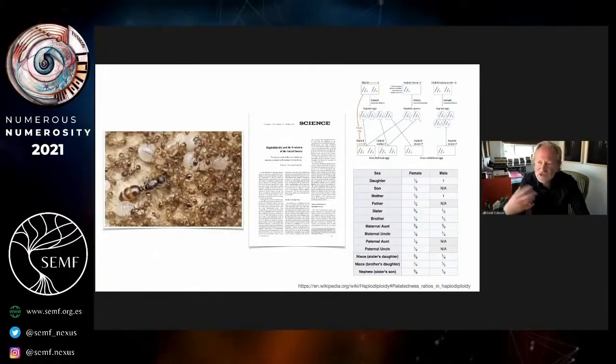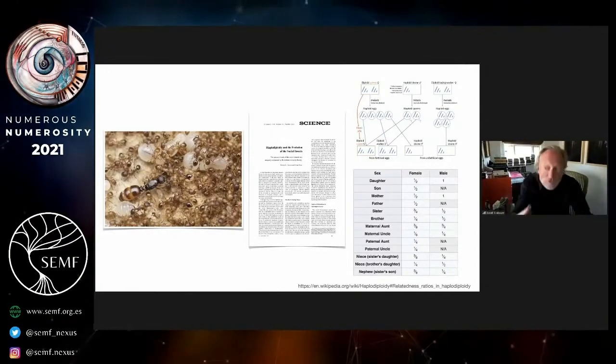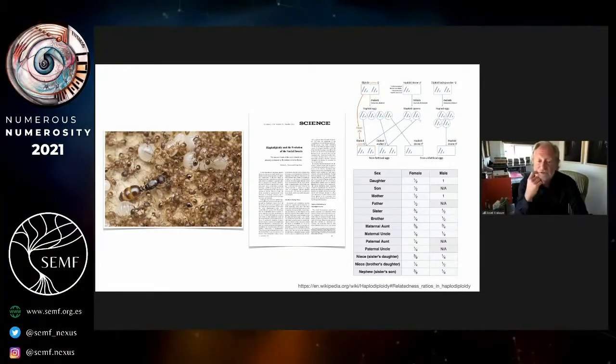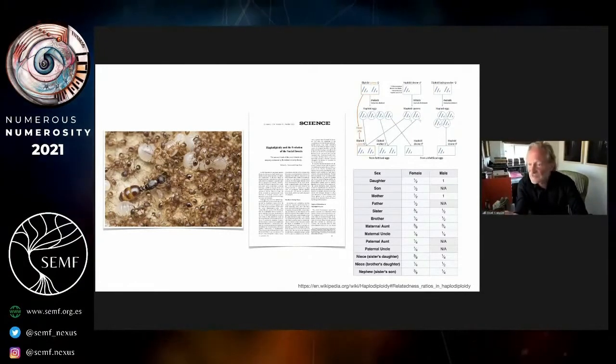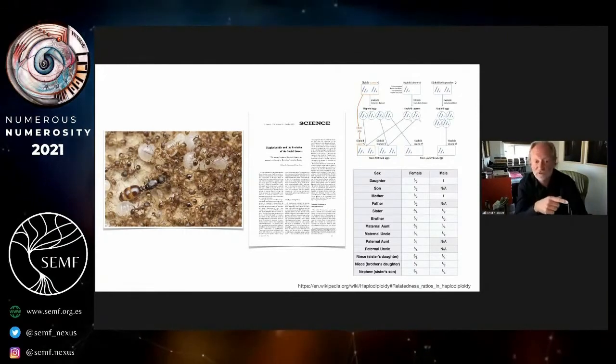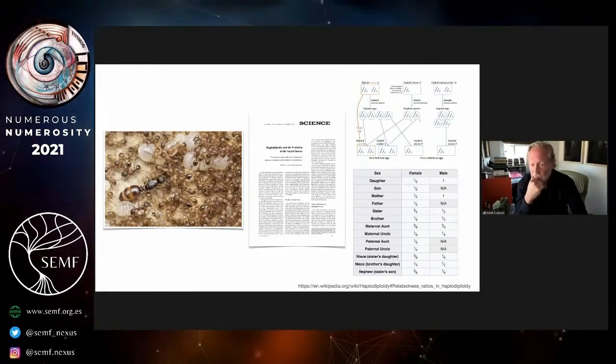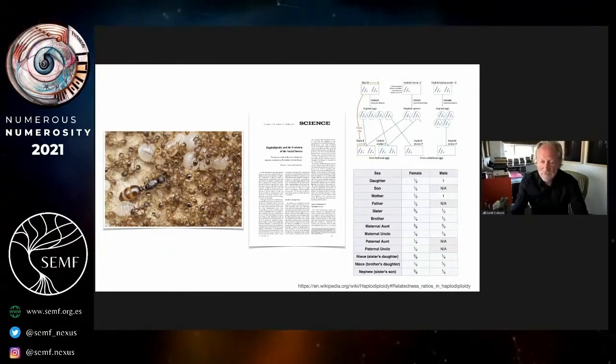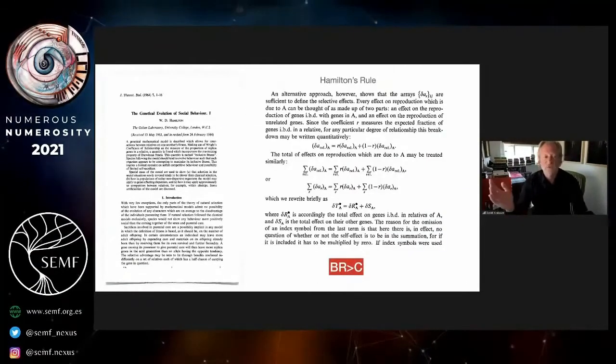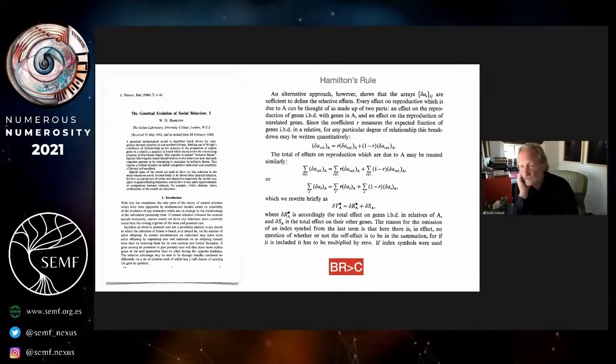The foundational theory of Haldane's remark is in fact the theory that explains those relatedness coefficients in the ants that we covered in our quiz. And the paper that did this was Bill Hamilton's 1964 series of papers on the genetical evolution of social behavior.